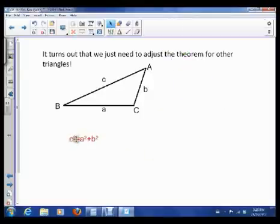So here's our Pythagorean Theorem. c squared is a squared plus b squared. Now we just adjust it a little bit, and this gives us a theorem that works for non-right-angled triangles.